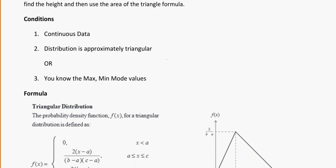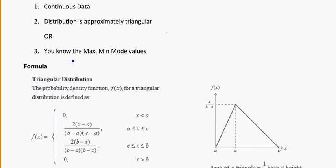Conditions for this distribution, you do need continuous data. It needs to be approximately triangular. So that should be kind of like a linear or straight line between the minimum and the mode and the maximum, with the peak at the mode. And it could just be given to you in terms of hints. Like you're only told the minimum, the maximum, and the mode. But they don't tell you what distribution. So you might assume that you have a triangular distribution.